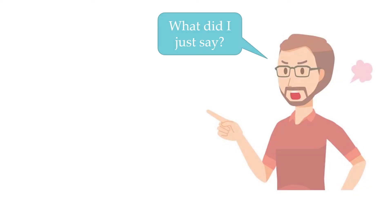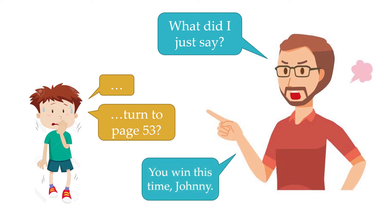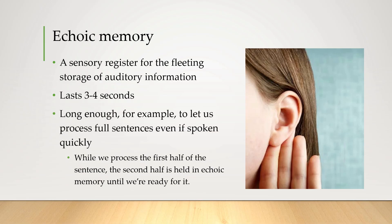Take this scenario: you're daydreaming in class when the teacher suddenly calls out your name and says 'What did I just say?' You have literally no idea because you were not listening, but suddenly you get a vague sense of a number — and if you hadn't been forced to think about it, you never would have remembered 'page 53.' The reason you were able to do that is because of another sensory register called echoic memory — just like iconic memory but for hearing. This one lasts longer: it's thought we can store about three to four seconds of auditory information, long enough to process full sentences even if spoken really quickly, because the second half of a sentence is held in echoic memory until we're ready for it.